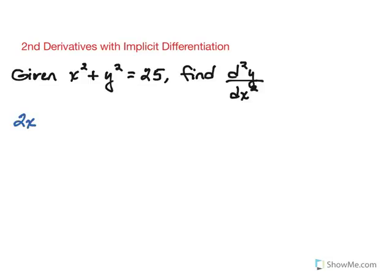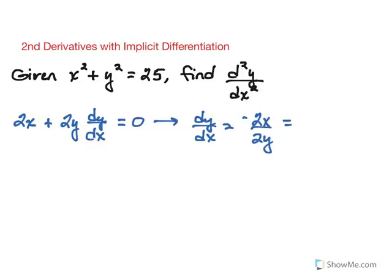So we would have 2x plus 2y dy dx equals 0. Solving that for dy dx then, we get negative 2x over 2y, which of course simplifies to negative x over y.